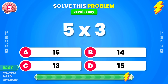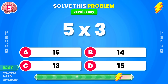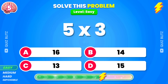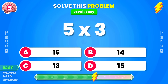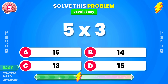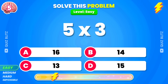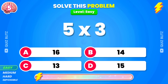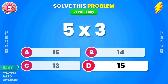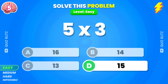What's the result of 5 times 3? The answer is 15.